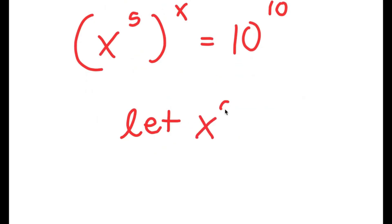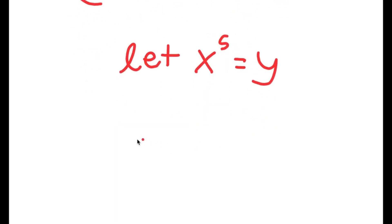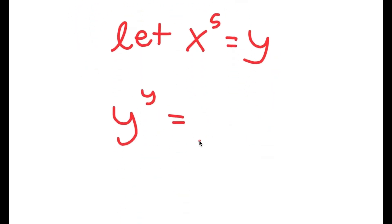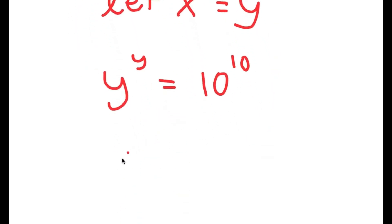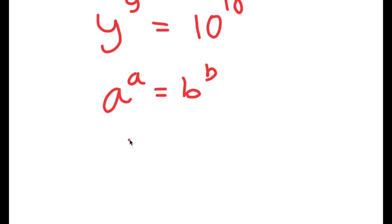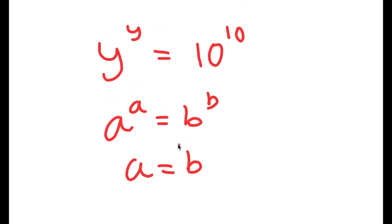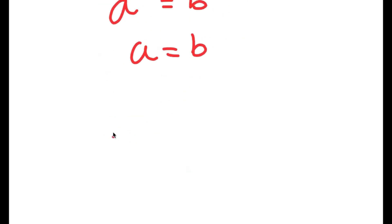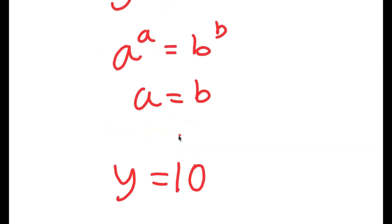Now I'm going to let x to the power of 5 equal y. So I get y to the power of y is equal to 10 to the power of 10. If I have something in the form a to the power of a is equal to b to the power of b, this means that a is equal to b. So in this case, y is equal to 10.